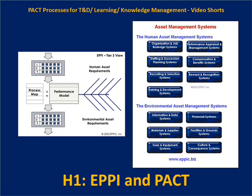On the human asset management systems side, we can look at organization and job design and redesign, staffing and succession planning systems, recruiting and selection systems, training and development systems, performance appraisal and performance management systems, compensation and benefit systems, and reward and recognition systems. These are the systems that bring in and do the care and feeding of the human assets that are either adequate to the needs of the process or they are not. Likewise, we can look at systems that provide information and data, materials and supplies, tools and equipment, financial requirements, facilities and grounds, and culture and consequences — to assess whether they're adequate or not, and if not, work on those systems to ensure they provision what the process requires.